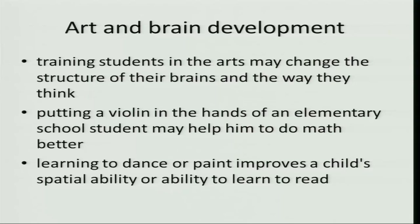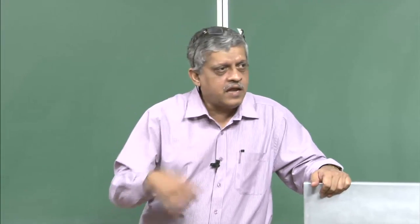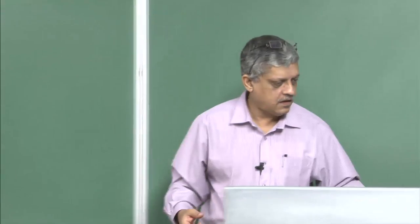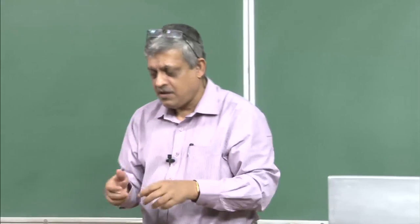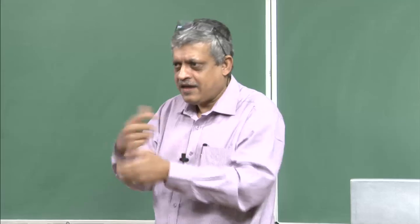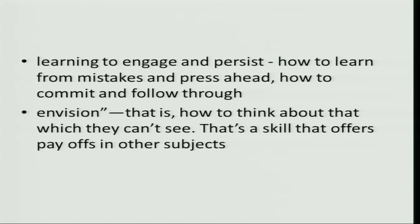Training students in arts may change the structure of their brains and the way they think. There is enough evidence for that. Putting a violin in the hands of a child may help them do math better. Learning to dance or paint improves the child's spatial ability to learn and to read. Studies have shown that teaching children music can improve their reading skills. Learning to engage and persist — if you take a lump of clay and it collapses and you have to do it again and again — teaches children persistence skills which no amount of game playing does.